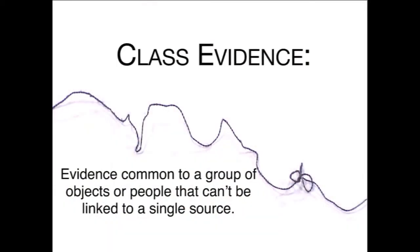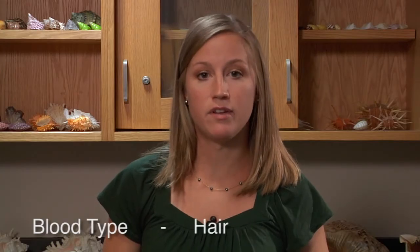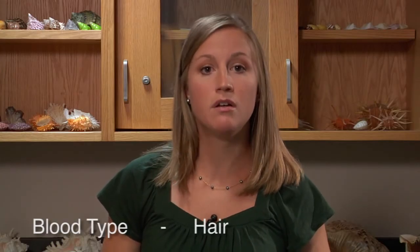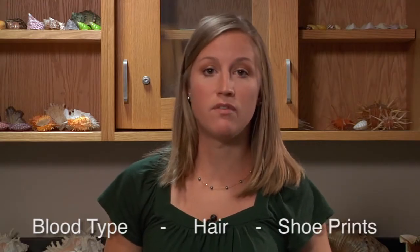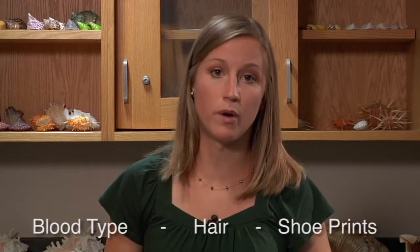Class evidence is evidence that is common to a group of objects or people and cannot be linked to a single source. Fiber evidence is a great example, because you can never link it to a single source. Other examples include blood type evidence, hair evidence where you don't have the root containing DNA, or shoe prints when you don't have individualizing wear patterns.